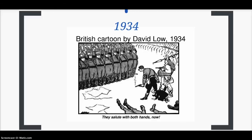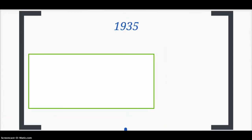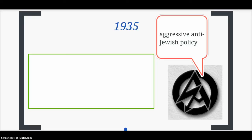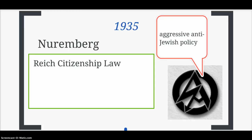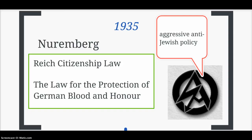1934 was something of a lull in persecution — also the year of the Night of the Long Knives, where Hitler removed the SA leadership. In 1935, persecution of Jewish people flared up again with an aggressive anti-Jewish policy designed to placate members of the SA. The Nuremberg Laws were proclaimed at the Nuremberg rallies: these included the Reich Citizenship Law, which deprived Jewish people of German citizenship and rendered them aliens within their own country, and the Law for the Protection of German Blood and Honour, which forbade intermarriage between so-called Aryans and Jewish Germans.